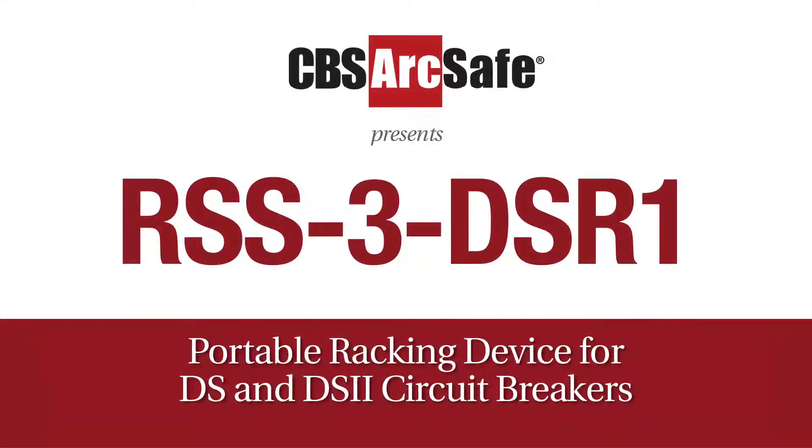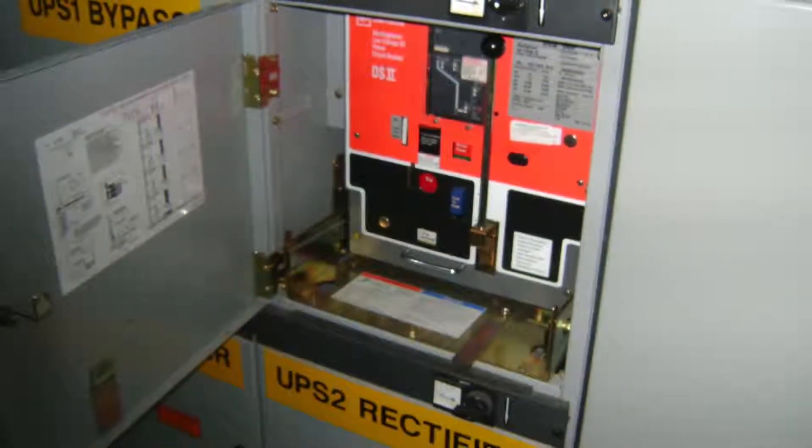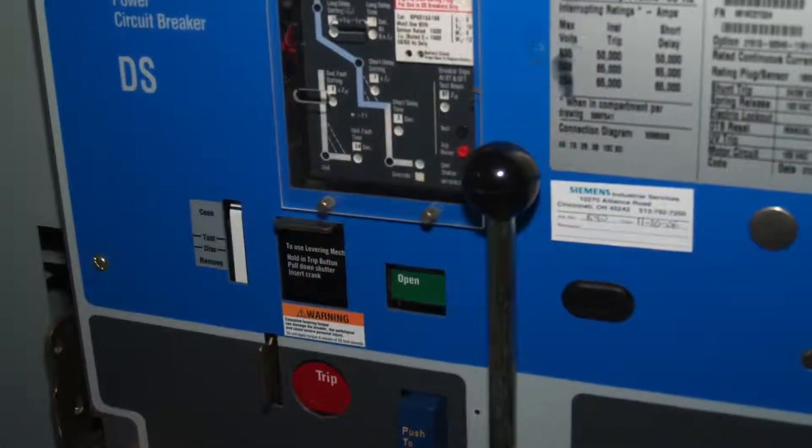CBS ArcSafe is pleased to introduce the RRS-3 DSR-1 portable racking device, designed specifically for use with DS and DS-2 circuit breakers ranging from an 800 amp frame to a 5000 amp frame.